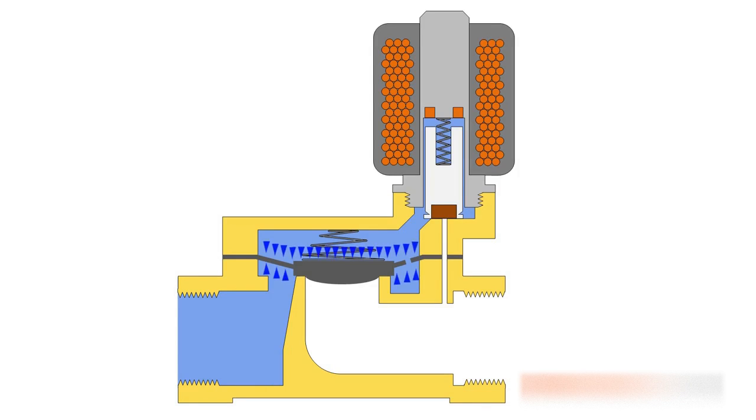The surface of the membrane in the upper chamber is larger than the surface in the lower chamber. As a result, the membrane is pushed downwards against the valve seat.